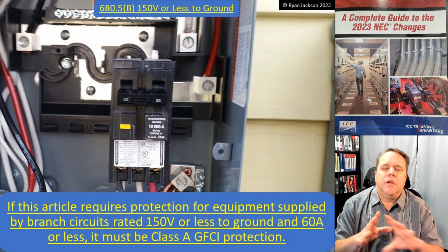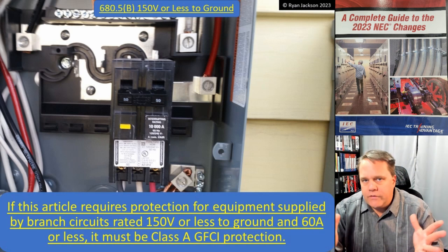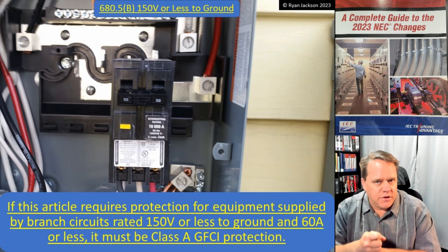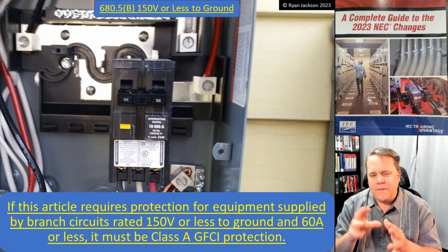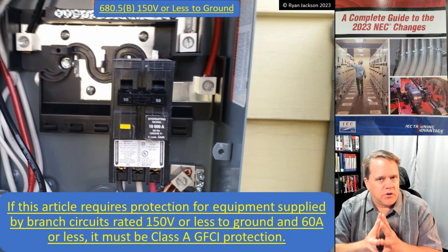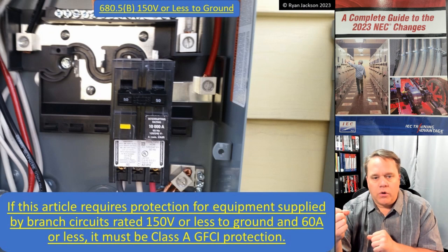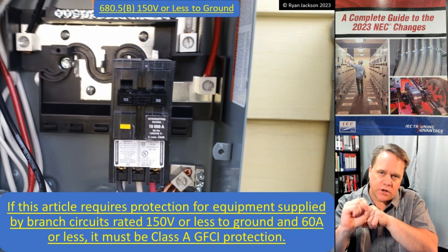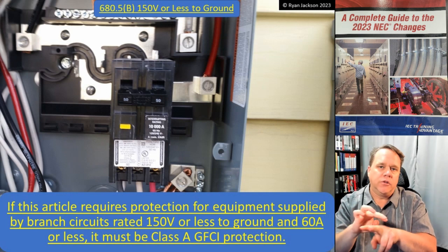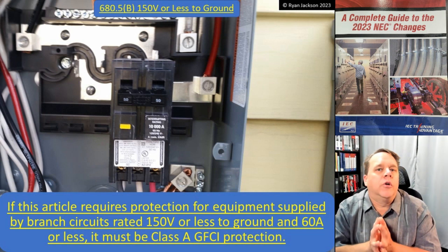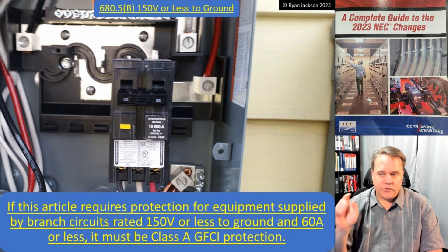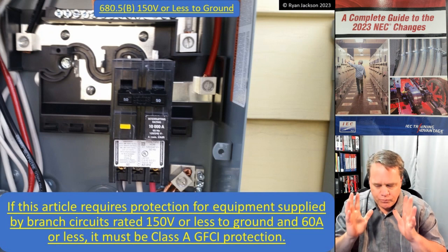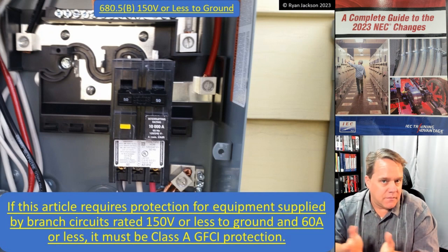GFCIs come in a few different flavors. A Class A GFCI is what we all have in our houses and at commercial buildings. Class A GFCI protection operates between four and six milliamps of leakage current. The way a GFCI works is it measures the current on the circuit conductors — whether that means a hot and a neutral, or two hots, or three hots plus a neutral. It has a CT that wraps around all of the circuit conductors and looks for the same amount of current flowing between them; that number needs to equal zero. If I have a 120-volt load pulling 10 amps, there's 10 amps on the hot and 10 amps on the neutral — the CT wraps around it, recognizes 10 and 10 equals zero, and everything is happy.